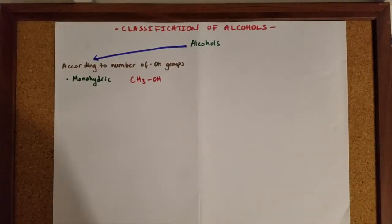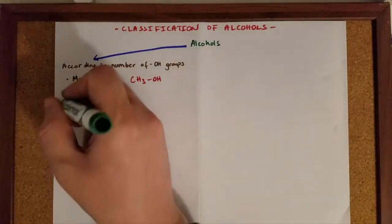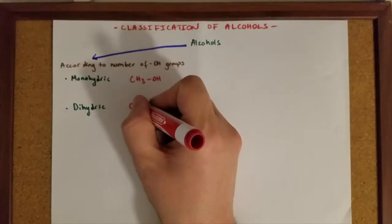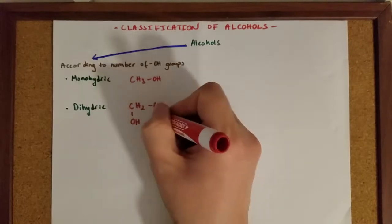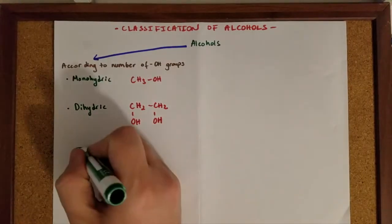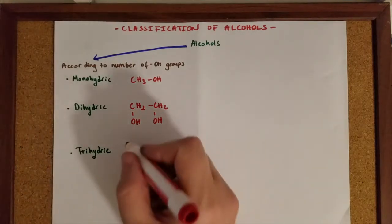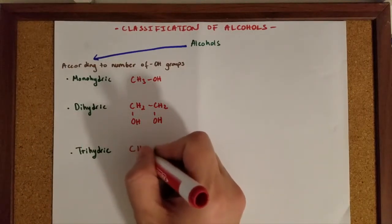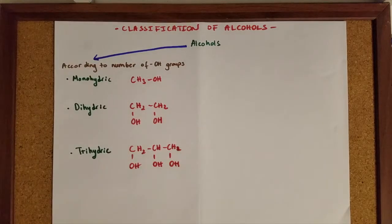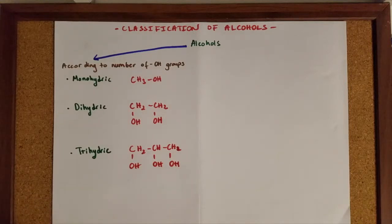The second type of alcohols are called dihydric alcohols. These alcohols do contain two OH groups. This is a compound which is used in antifreeze. And the third group contains three OH groups. This compound is called glycerin and it is widely used in cleaning materials and cosmetics.